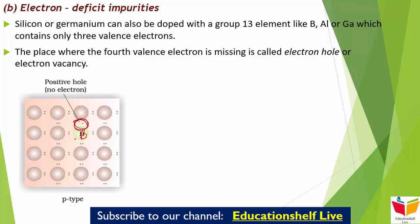Now an electron from a neighbouring atom can come and fill the electron hole, but in doing so it would leave an electron hole at its original position। जैसे suppose करो यह वाला electron यहाँ से आके यहाँ fit हो गया, लेकिन फिर वो अपना electron hole छोड़ देगा। It would appear as if the electron hole has moved in the direction opposite to that of the electron that filled it — मतलब जिस electron ने उसे fill किया उससे opposite direction में electron hole move कर रहा है।